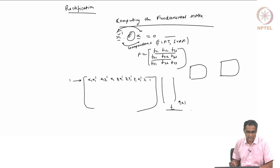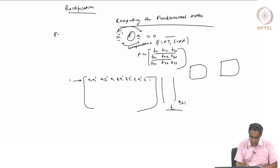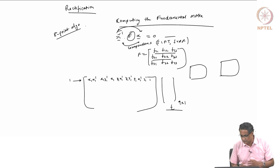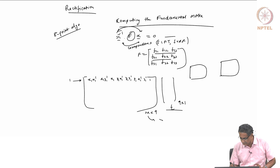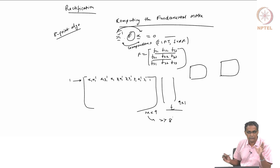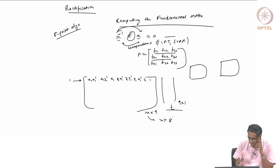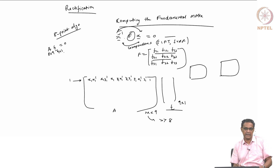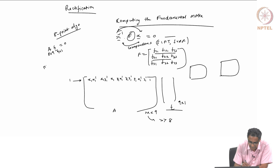There is a famous algorithm called the 8-point algorithm. Typically you do not stop at 8 points due to noise — you construct a matrix that is M×9 where M is much larger than 8. But the 8-point algorithm works as follows in the ideal case with exact correspondences: you call this matrix A, then A·f = 0, where A is 8×9. Since A can only have a maximum rank of 8, there is a nonzero F which maps to 0, and that can be found as the null space of A.